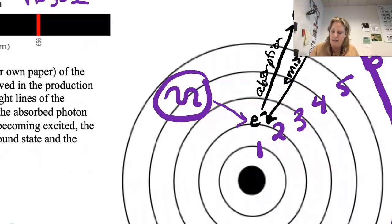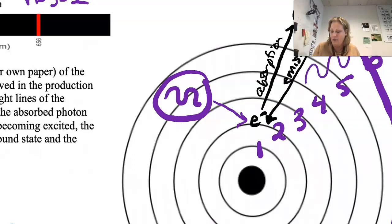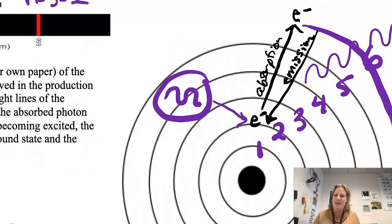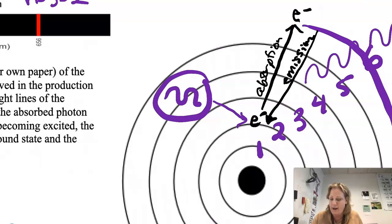Then the electron wants to return back closer to the nucleus — that's the emission process. It gives back the same amount of energy it absorbed from the photon, and it might be a color we can see. The violet wave has a high frequency and smaller wavelengths.